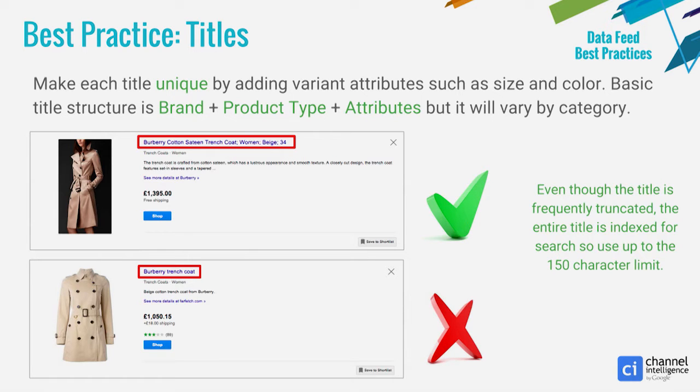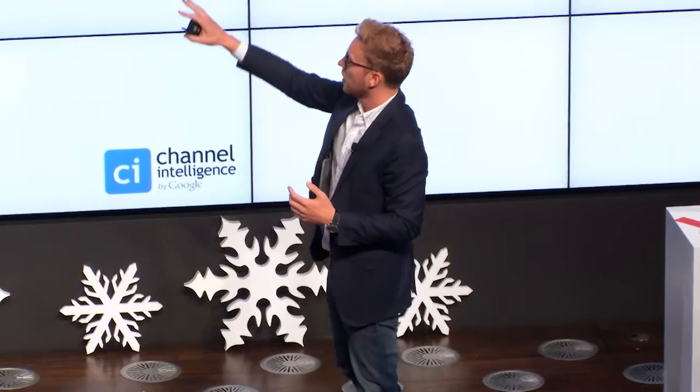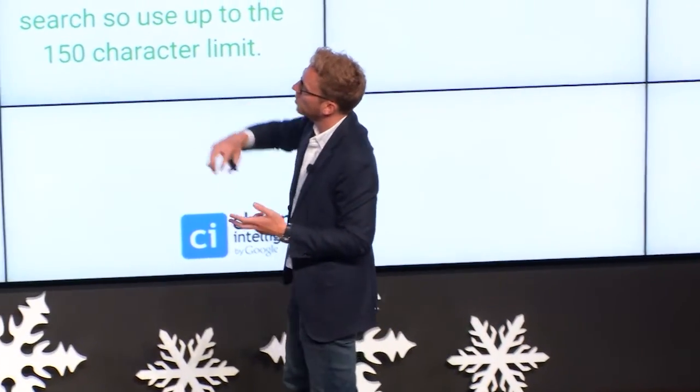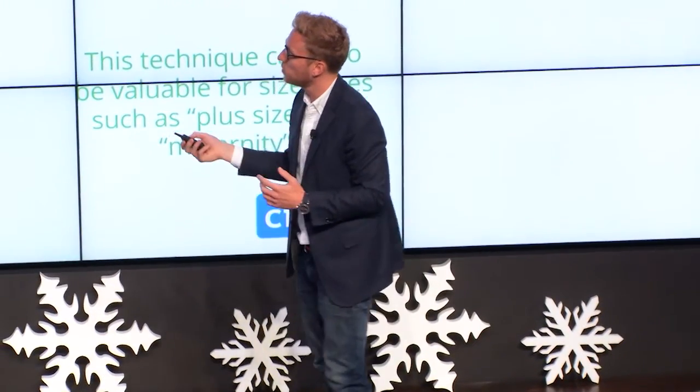The last reason you want to make your titles unique is that if you've got a lot of product variants in your feed — different colors, different sizes of the same item — and they all have the same title, they're all just going to compete with each other in the auction. So generally, the title structure you want to follow is brand plus product type plus attributes, though the order will change depending on the situation.